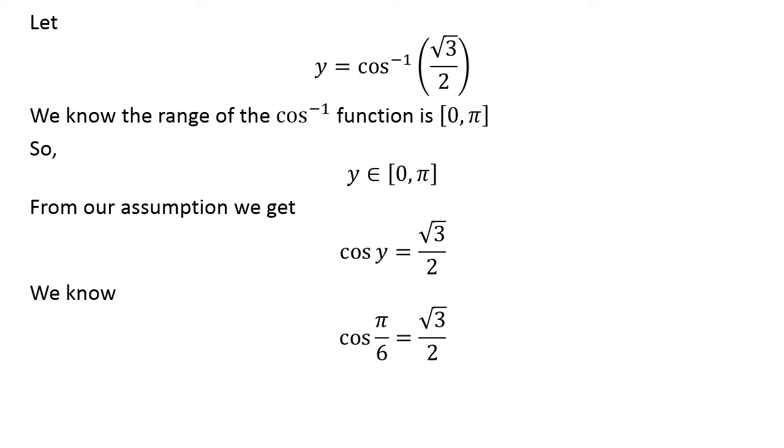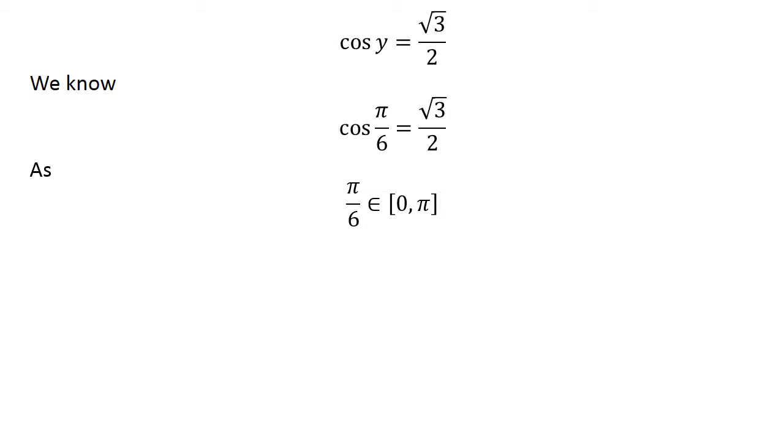We know cosine of pi upon 6 equals square root of 3 upon 2. As pi upon 6 lies in the closed interval of 0 and pi,